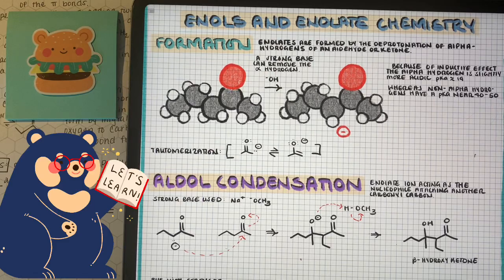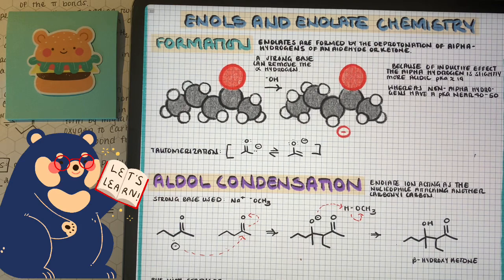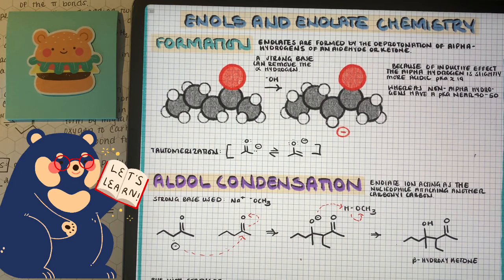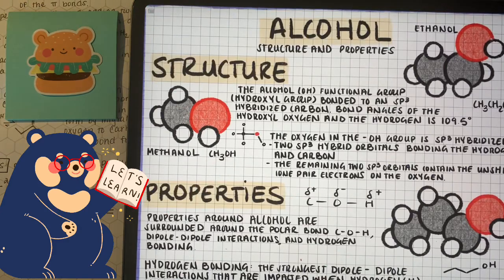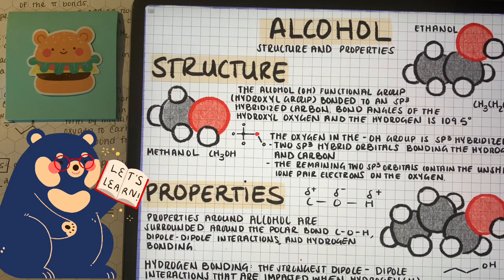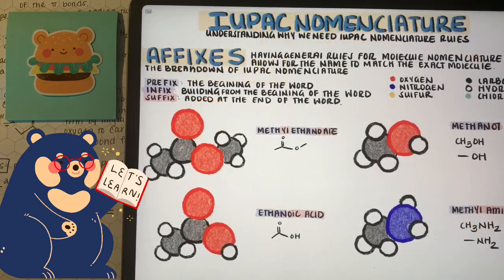Before we start diving into some of the details of the properties of carbon, atomic orbitals, and hybridization, we have to find some way to standardize how we're both going to display, name, and talk about these organic compounds. Because we need a universal way to talk about different molecules, such as the difference between ethanol and methanol. And this is why in this video we're going to talk all about the IUPAC nomenclature, or more or less the universal rules when naming organic compounds.